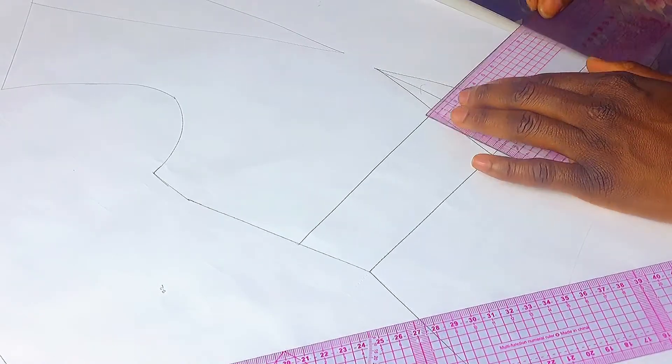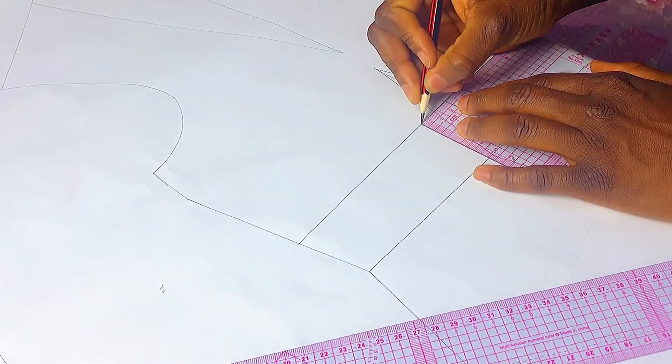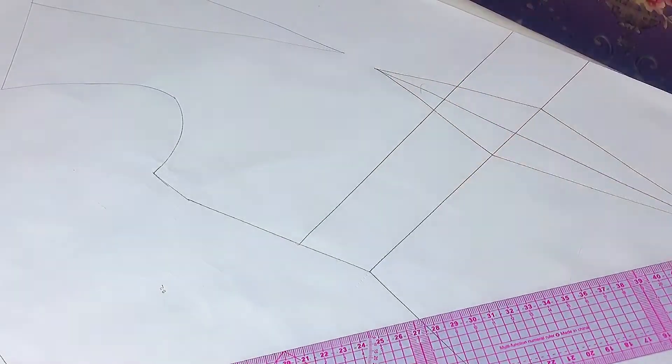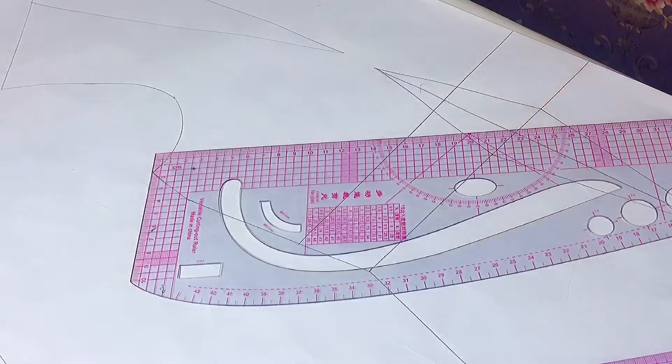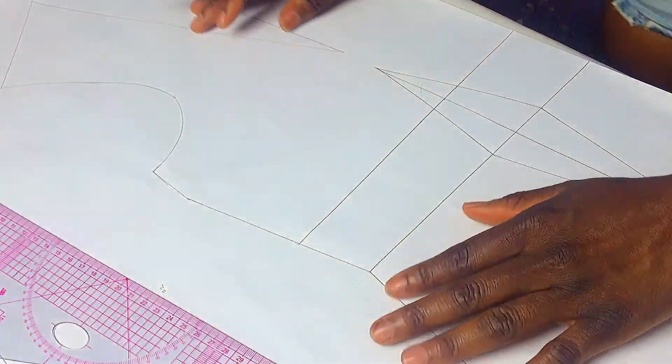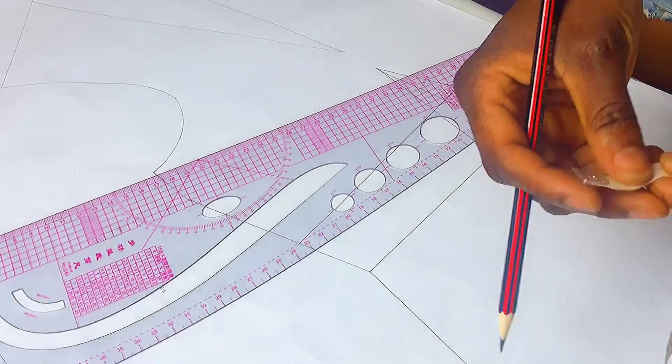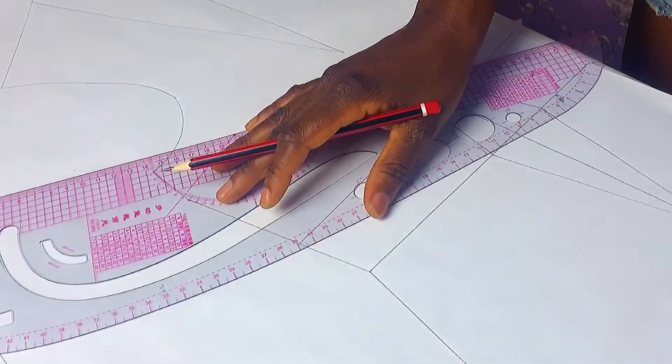After you have measured, subtract your actual underbust measurement divided by four from what is on your pattern and then you will be sharing the figure you arrive at on both sides of your dart. This is necessary to achieve a better and curvier fit around the underbust.